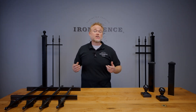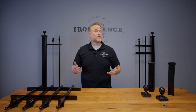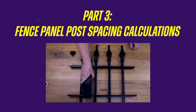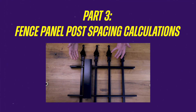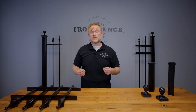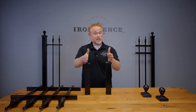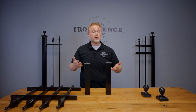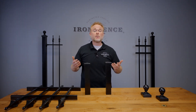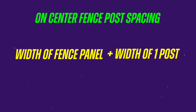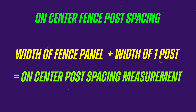Now that we know what materials we're installing and have thought about any special considerations, let's roll into part three: your fence panel post spacing calculations. For spacing your fence posts, we find the on-center post calculation to be the best way to mark your layout for digging your holes or marking your flange posts. This number tells us how far apart it is from the center of one post to the center of the next post in line, allowing you to target the middle of your post hole. To get our on-center fence post spacing number, we take the width of your fence panel plus the width of one post.